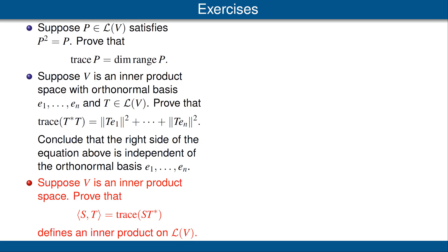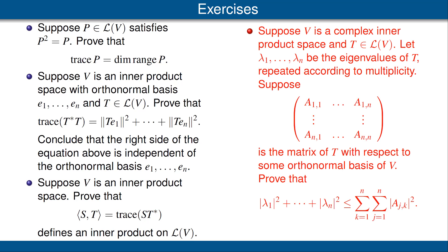The third exercise: suppose V is an inner product space. Define an inner product on L(V) by setting the inner product of S and T equal to trace(S T*). Prove that this is truly an inner product on L(V). The fourth exercise: suppose V is a complex inner product space, T is an operator on V, and lambda 1 through lambda n are the eigenvalues of T repeated according to multiplicity. Given the matrix of T with respect to some orthonormal basis, prove that the sum of |lambda_j|² is less than or equal to the sum of the squares of the absolute values of all entries in the matrix. Working on these exercises is very instructive.